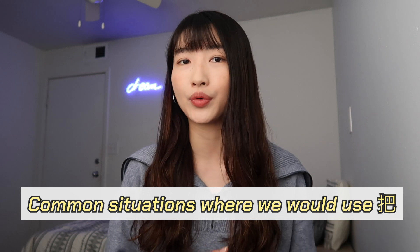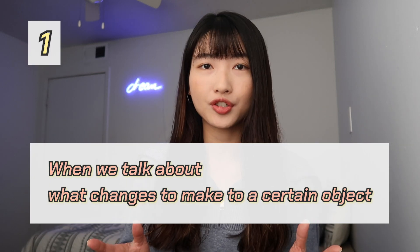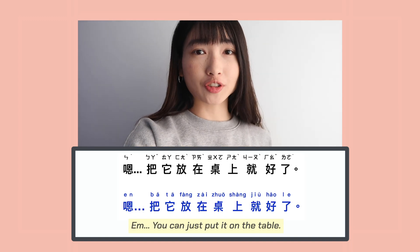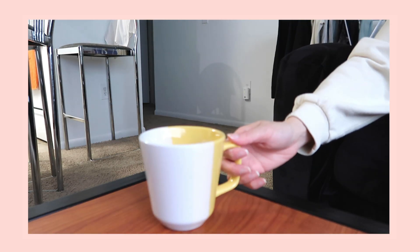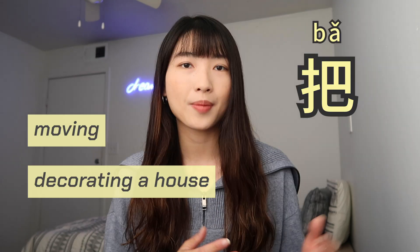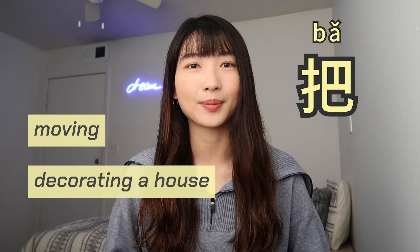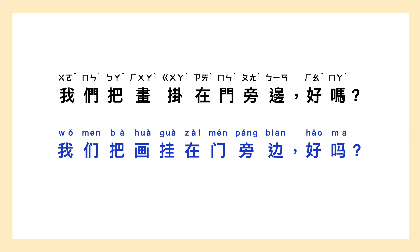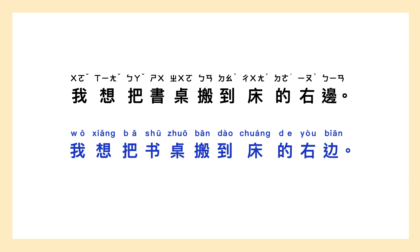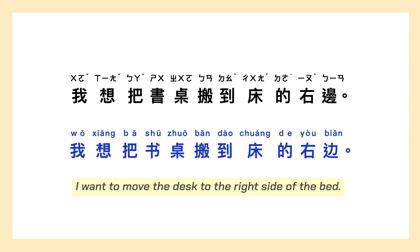Now let's see some common situations where we would use 把. The first one is when we talk about what changes to make to a certain object. For example: 诶，你觉得我应该把杯子放到哪儿? 把它放在桌上就好了。 Here we are talking about making a change in position to the mug, so we use 把. When we are moving or decorating a house, we often use the 把 construction because we are talking about where to put objects. For example: 我们把画挂在门旁边好吗? — Let's hang the painting next to the door, okay? 我想把书桌搬到床的右边。 — I want to move the desk to the right side of the bed.